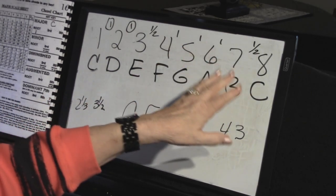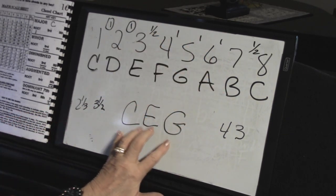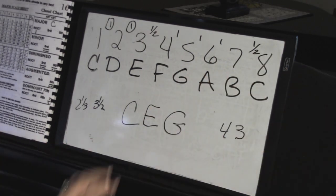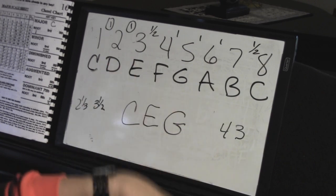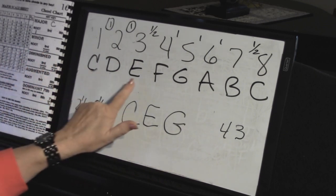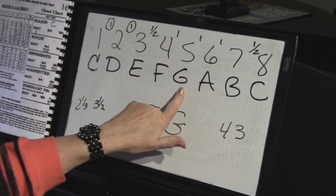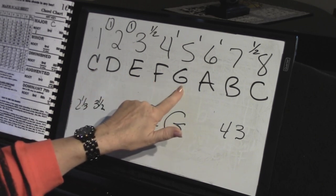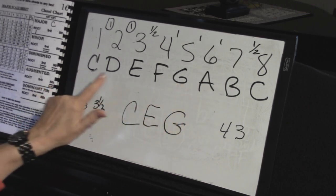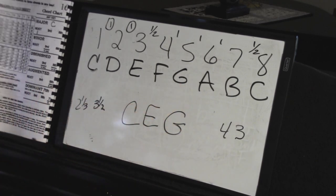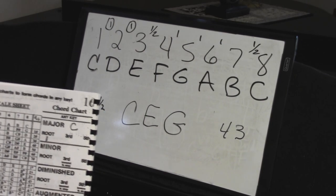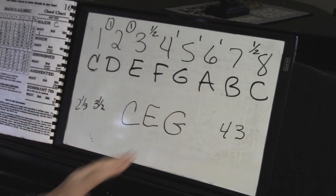Later when we add letters like sevenths, major sevenths, ninths, and sixths, we're just going to add to the first, third, and fifth — sixth, seven, eight, and keep going. Those are the numbered chords. Always remember the rule for a major chord is one, three, and five. Later we'll talk about minor: one, three-flat, and five. Augmented: one, three, five-sharp. Diminished: one, three-flat, five-flat. What's important now is that you understand chords come from scales.